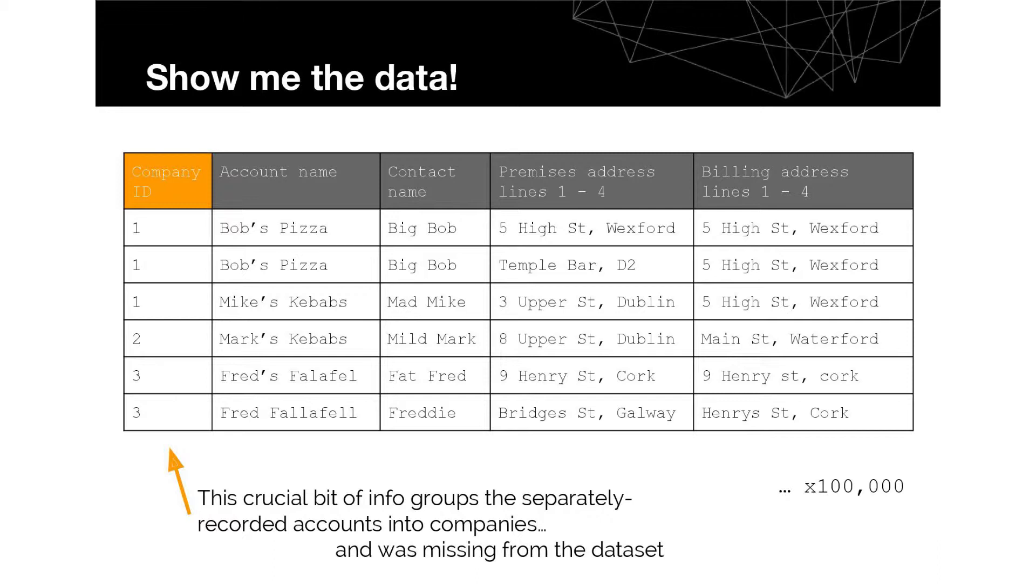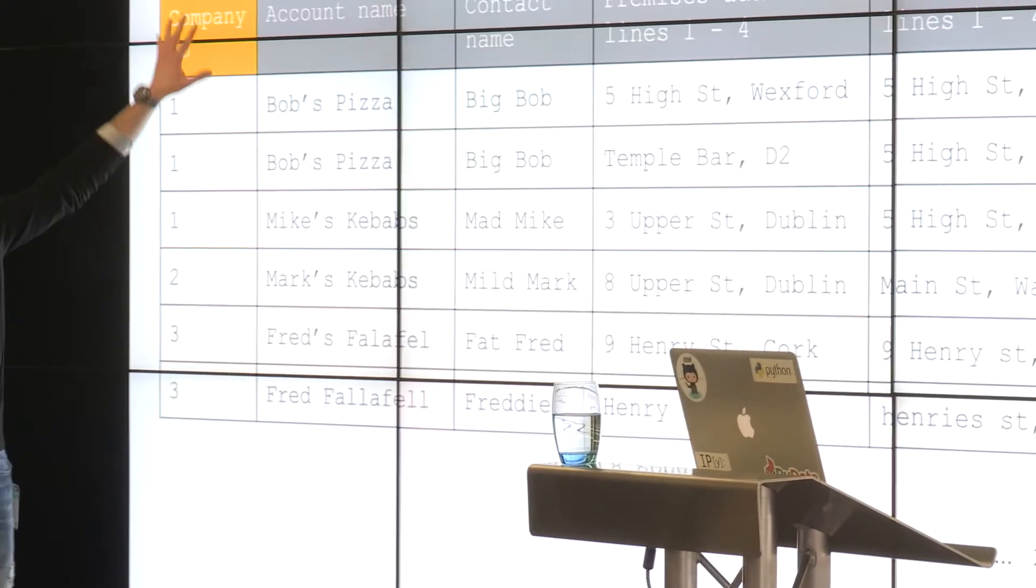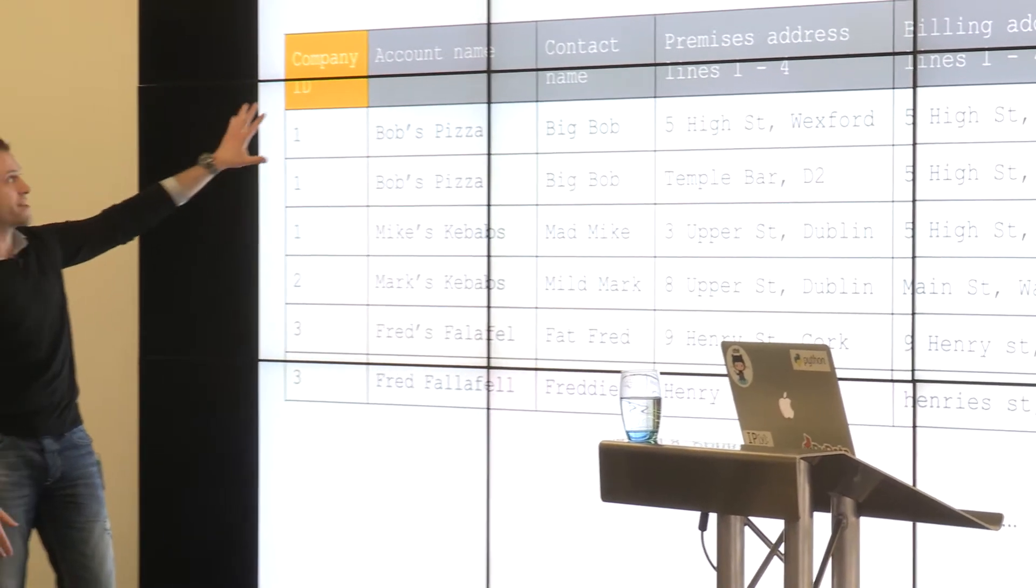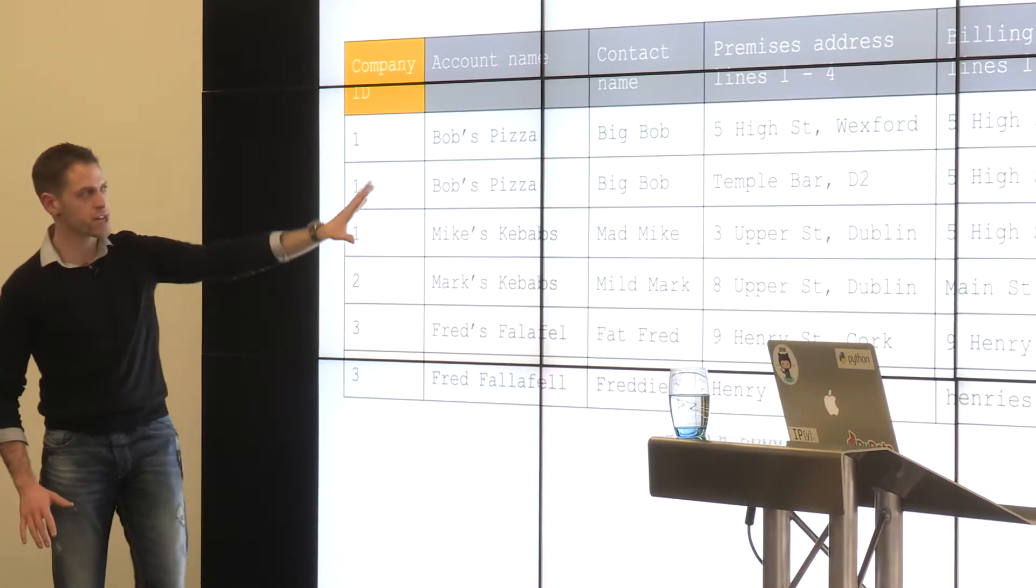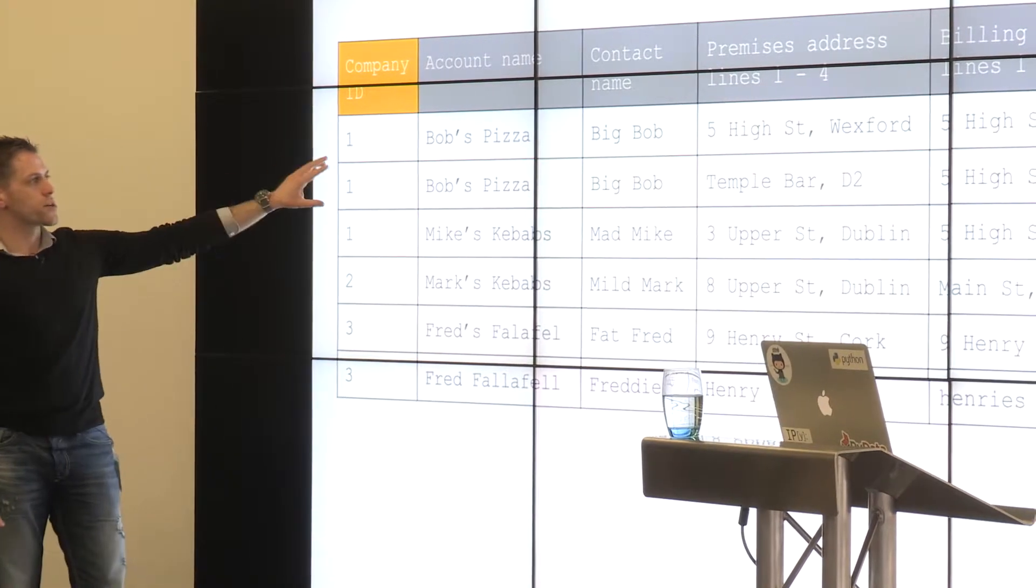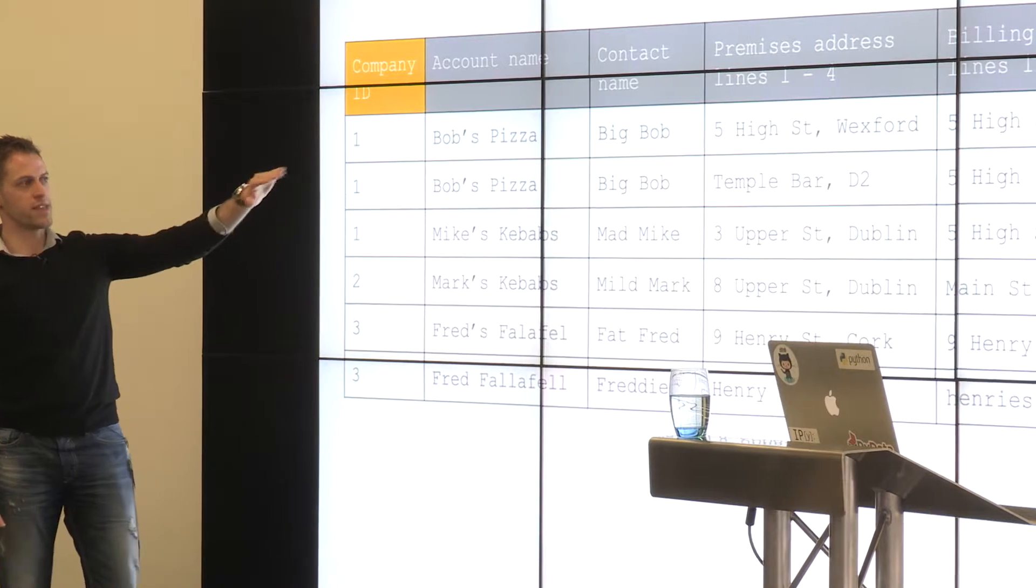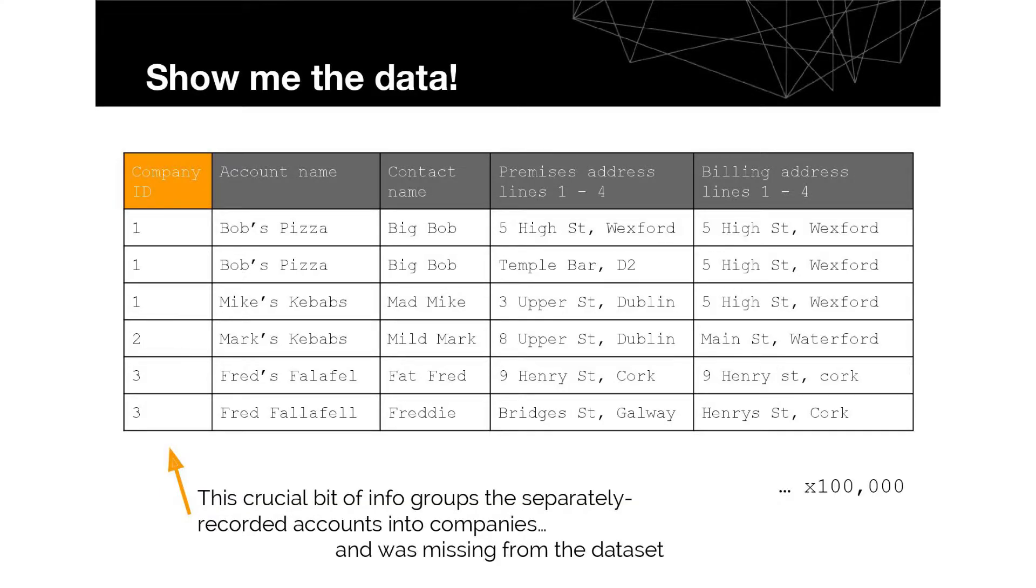Lots of fairly rudimentary things that we went through. I thought I'd draft up a quick fast food based example of some of the data and some of the things that we were looking at. For instance, Bob's Pizza is in here a couple of times. I should add this is what we're trying to find, this orange bit. This wasn't present in the data, only the gray stuff.